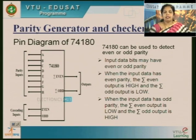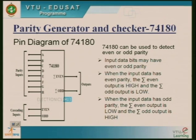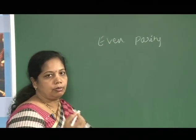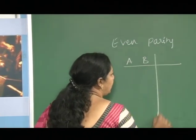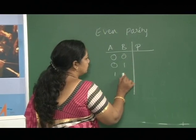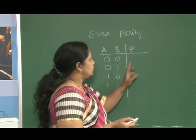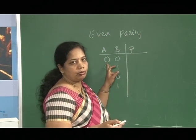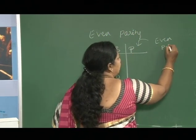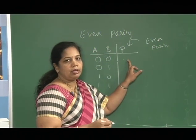For parity generation, I'll take an example. If I want to generate even parity with two input bits, I will add an additional bit called the parity bit. With two inputs, we write four combinations. This is the additional parity bit I am going to add. If I am adding this as an even parity bit, I should make all numbers have an even number of 1s.